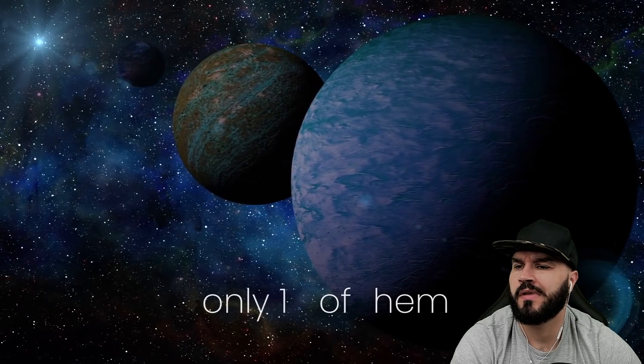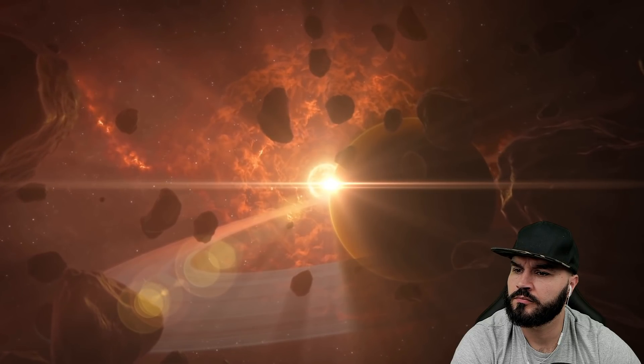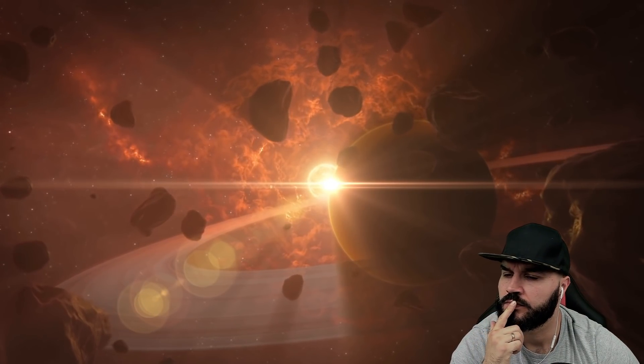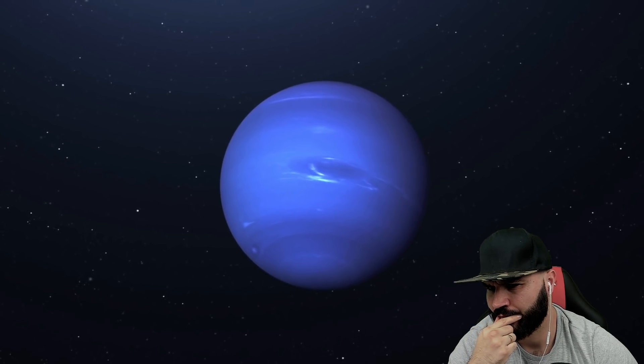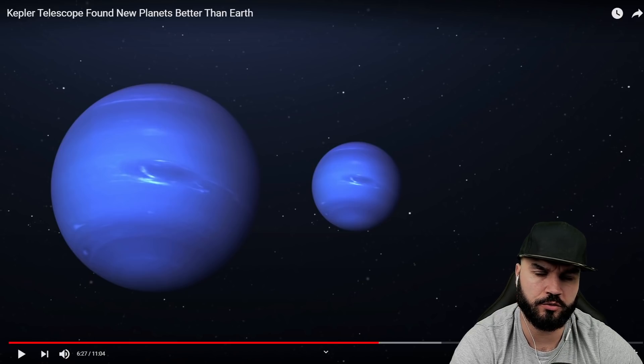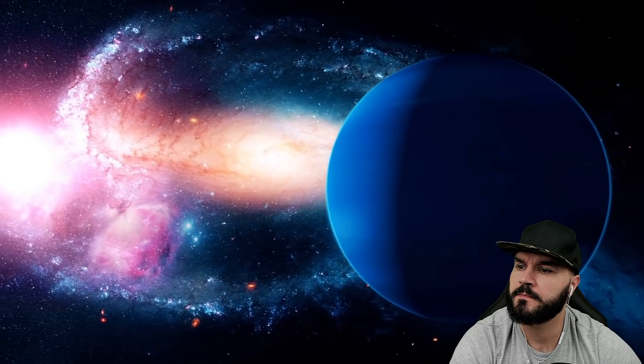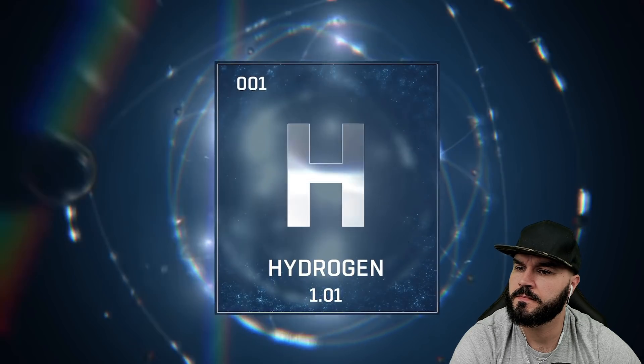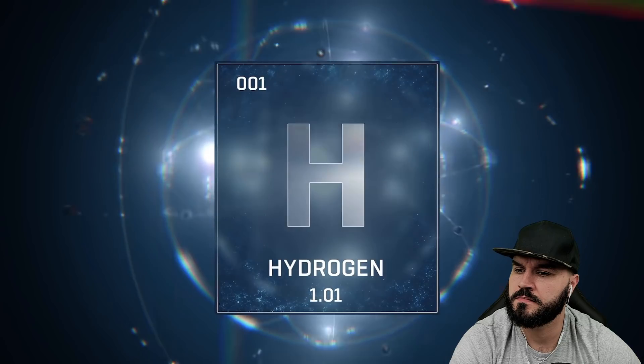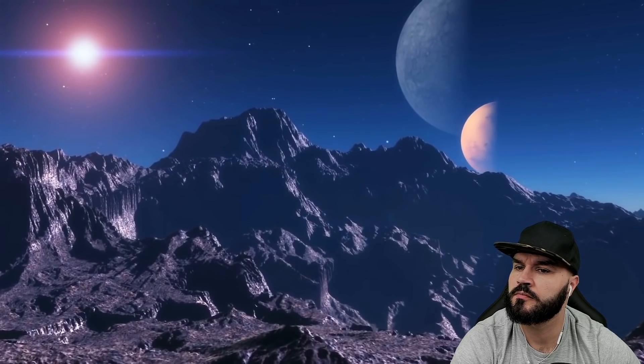But before we get ahead of ourselves, it's important to note that out of the 2,662 exoplanets identified by Kepler, only 16 of them lie inside the Goldilocks zone. And out of these 16, some of these planets are tidally locked with their parent stars, meaning that only one hemisphere of the planet faces the star and this is not ideal for life. Others are more like a smaller version of Neptune than a larger version of Earth. If anyone knows why that makes a difference, I'm not really a space nerd, I don't know too much about why would that prohibit life on Earth.